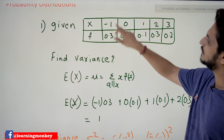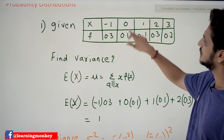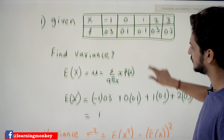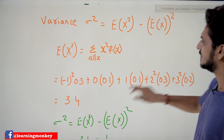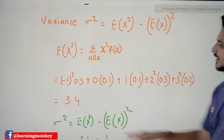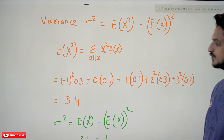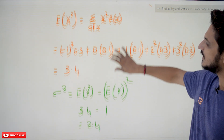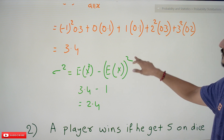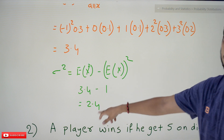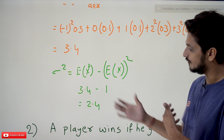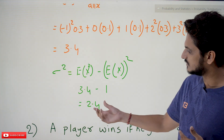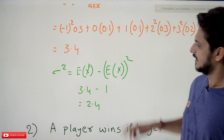Substituting: minus 1 squared (which is 1) multiplied by 0.3, plus 0 squared multiplied by 0.1, plus 1 squared multiplied by 0.1, and so on. The final value of E(X squared) is 3.4. Therefore, variance equals 3.4 minus 1 squared, which gives 2.4. This value of 2.4 represents the measure of dispersion — how much the distribution is spread.